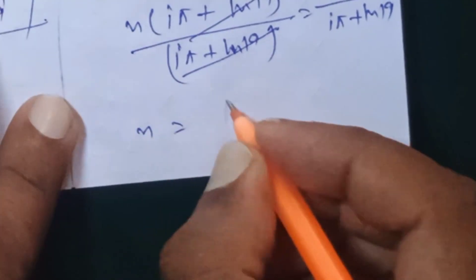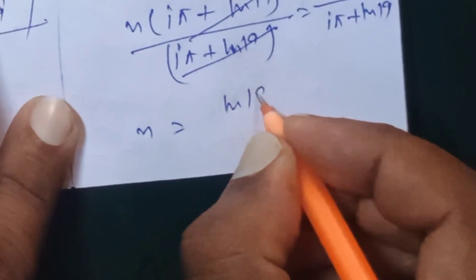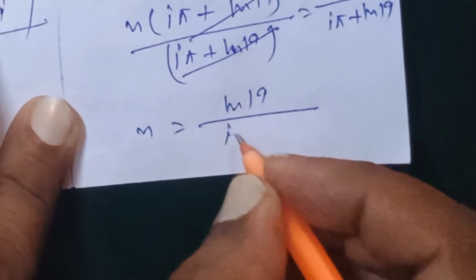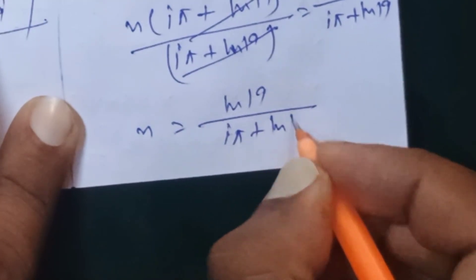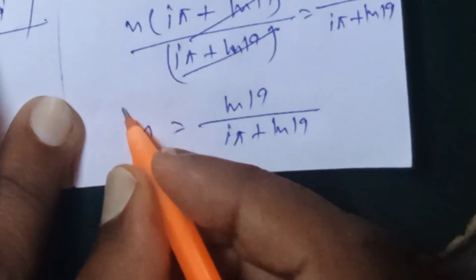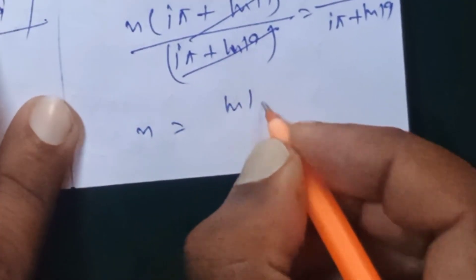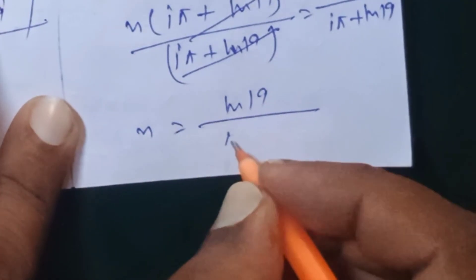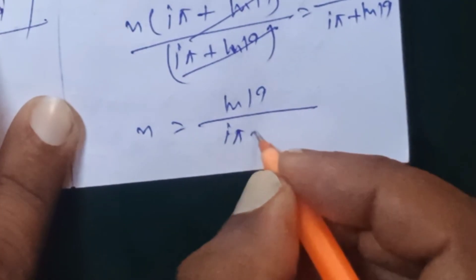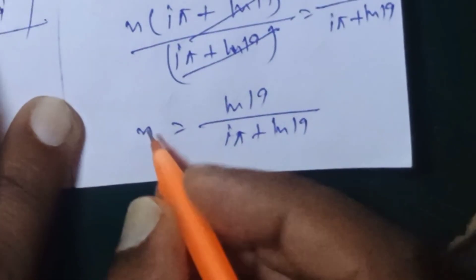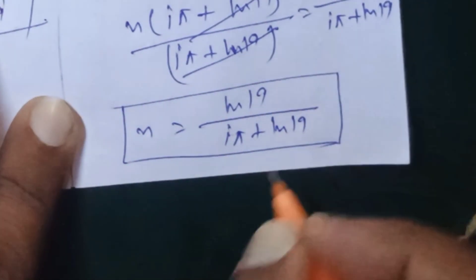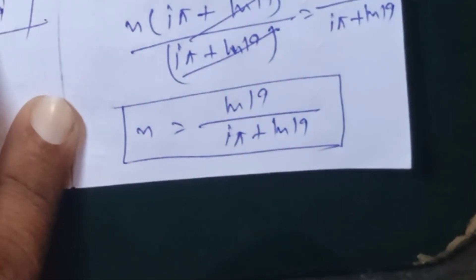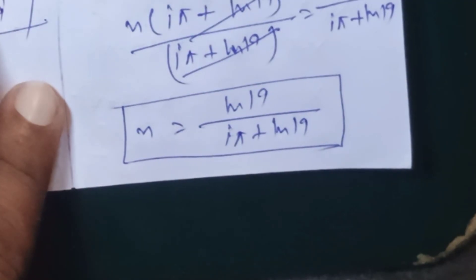This is the final value of n: n = ln(19) / (iπ + ln(19)). Thank you for watching my video. Please subscribe to my channel. Take care, bye bye!